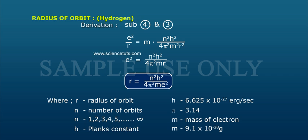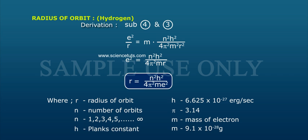Substituting equation four into equation three gives e squared by r equals n squared h squared by 4 pi squared m squared r squared. Cancel the common terms to get e squared equals n squared h squared by 4 pi squared m r — solving for r gives the expression for the radius of the nth orbit.